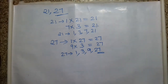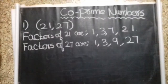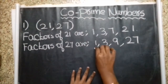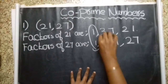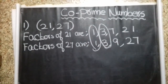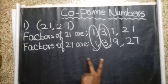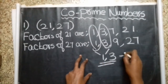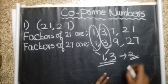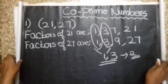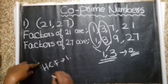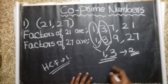The factors of 21 are 1, 3, 7 and 21. The factors of 27 are 1, 3, 9 and 27. Looking at the common factors, number 1 is common and number 3 is also common. So there are 2 common factors: number 1 and 3. According to the definition, the HCF must be 1 for co-prime numbers.